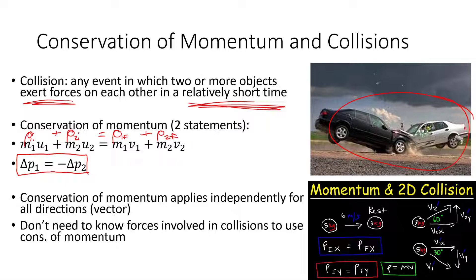Plugging in mass times velocity, we get the conservation of linear momentum equation in one dimension: m1·u1 + m2·u2 = m1·v1 + m2·v2, where u is initial velocity before the collision, v is final velocity after the collision, and subscripts 1 and 2 refer to the two objects. Since momentum is a vector, this is a vector equation.